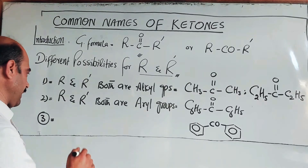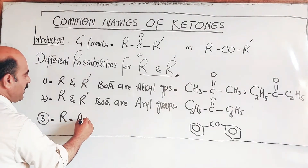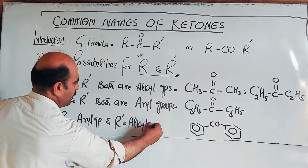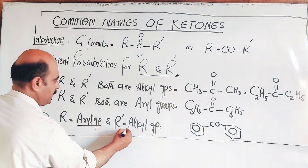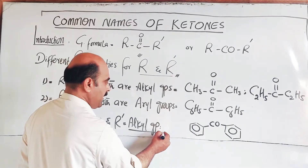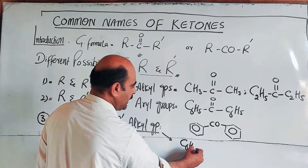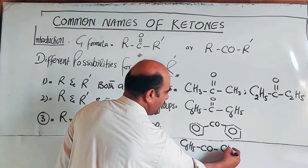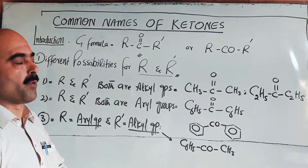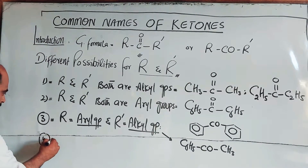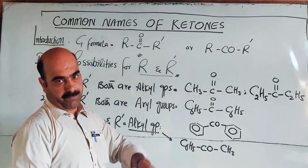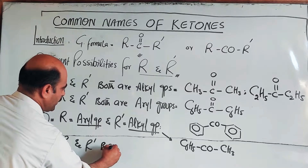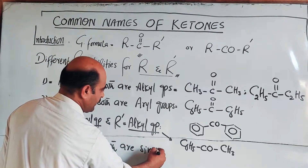So what are the possibilities? R and R' can both be alkyl groups, R can be alkyl and R' can be aryl, or both can be aryl. For example, the R group can be C6H5, the phenyl group. So when R is C2H5, we can expand that as CH3-CH2-CO-CH2-CH3, which is an ethyl group on both sides.